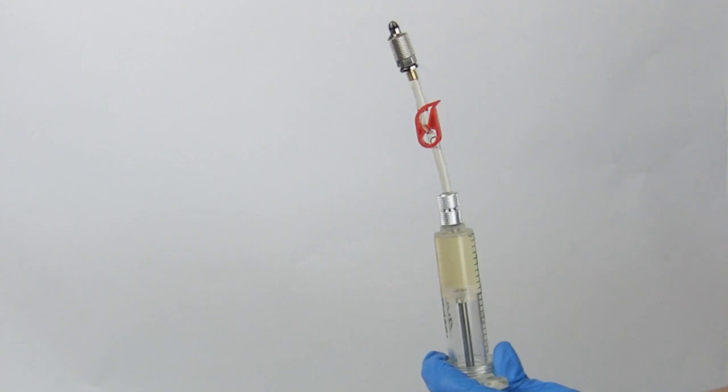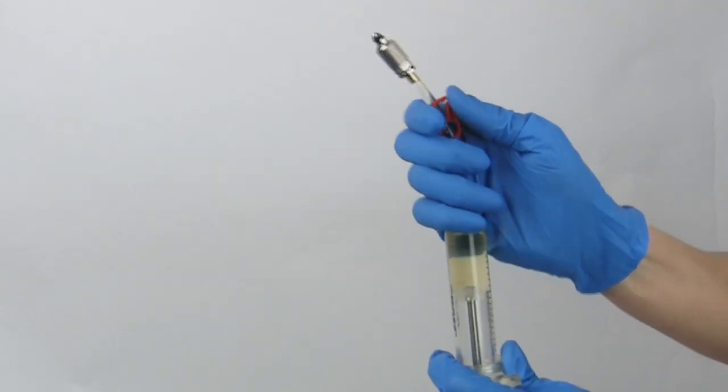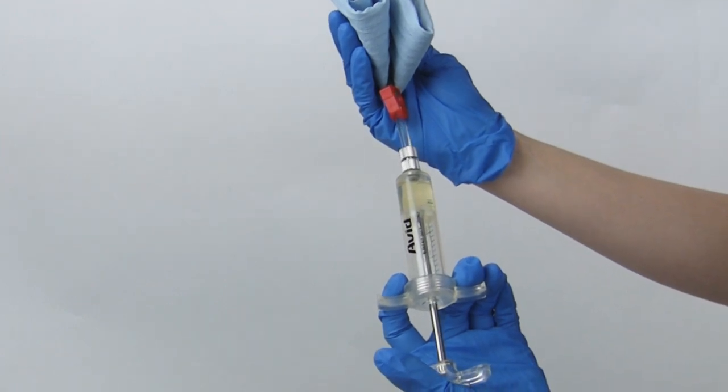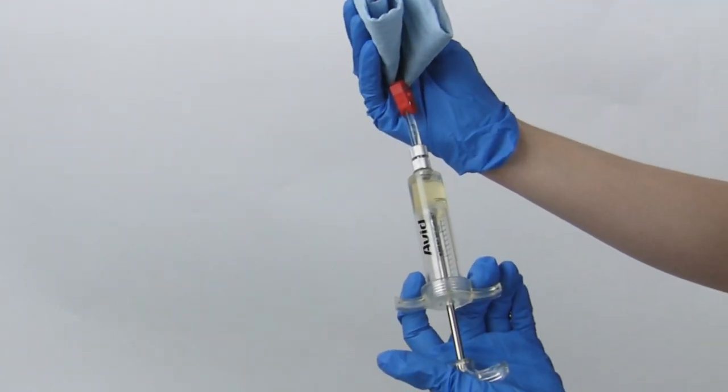Release the plunger, open the clamp, and carefully push the air out. Repeat this process two to three times for each syringe.